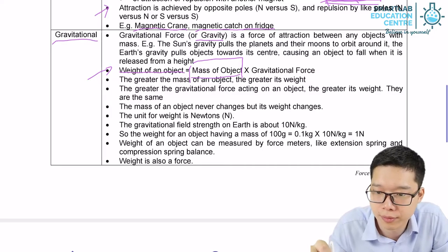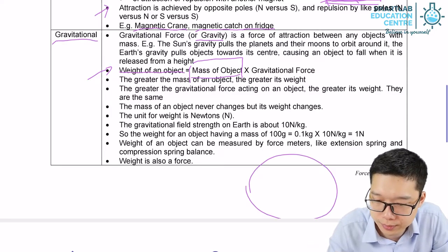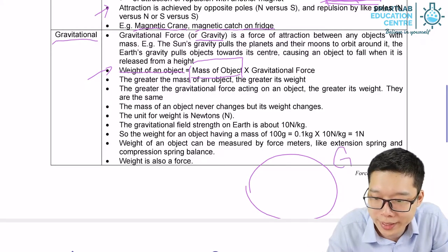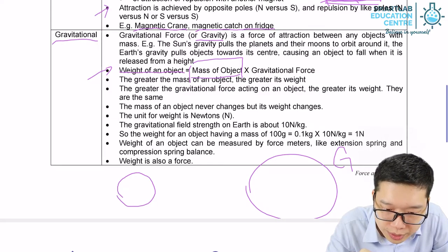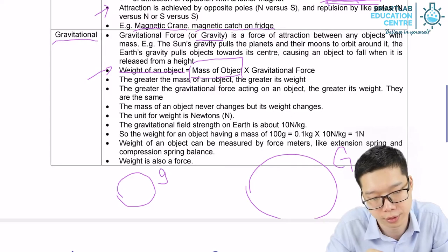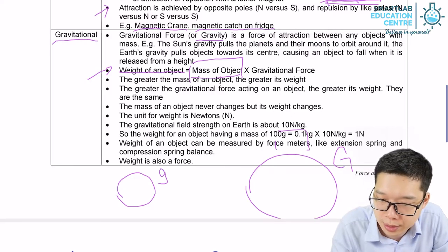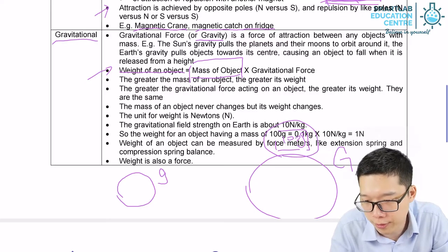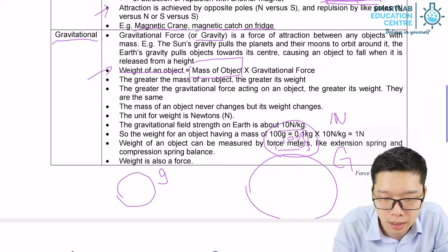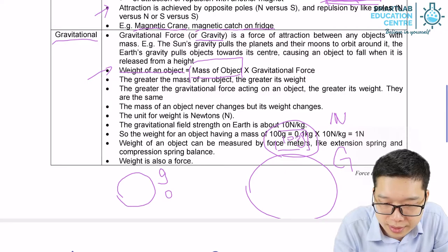Because if you are living on earth, you will have a greater gravitational force. But if you are on moon, you will have a smaller gravitational force. So for a mass 100 grams on earth, it will be 1 newton. On moon, it will only be 0.6 newton.